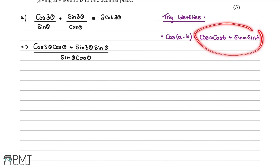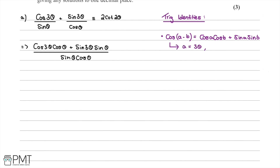The right hand side of that identity, cosA cosB + sinA sinB, is exactly what we have in the numerator. So we let a = 3θ and b = θ, and we can write the numerator as cos(3θ − θ), divided by the denominator sinθ cosθ.